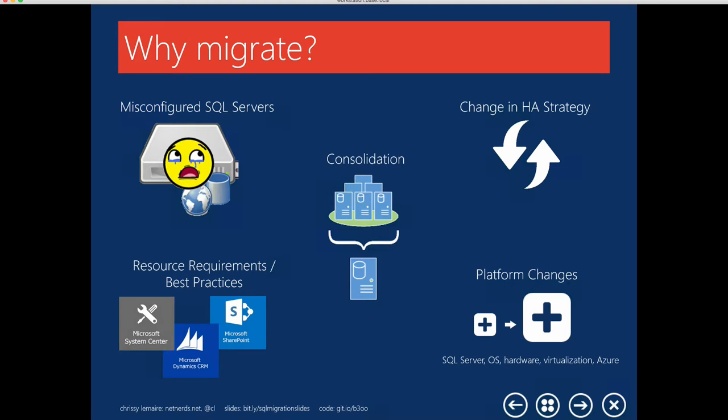Another reason is consolidation. A lot of organizations are looking to reduce the number of servers they're using either because of an increase in licensing costs, especially with SQL Server 2012, or because of unmanaged server sprawl. Companies may also migrate because of a change in their high availability strategy, such as going from a failover cluster to Always On, or alternatively, they may look to move from clustering to a standalone instance and then manage their HA outside of SQL Server and Windows.